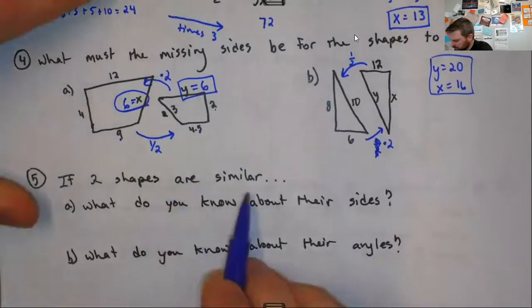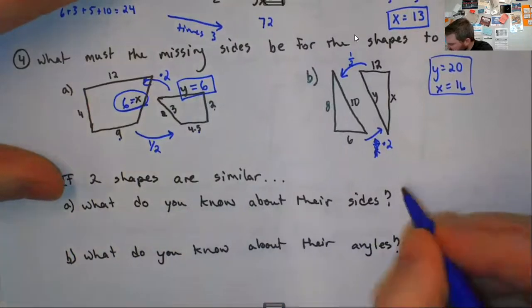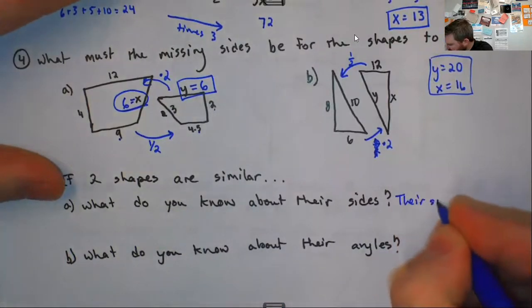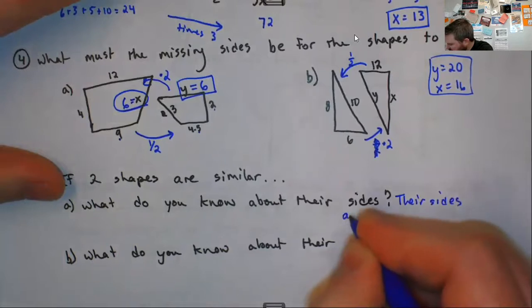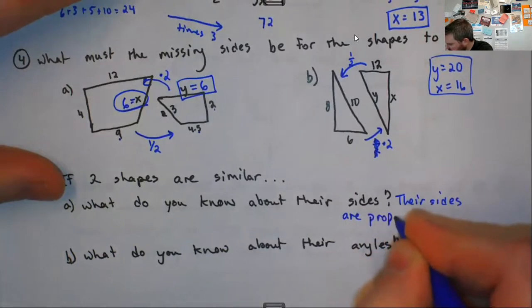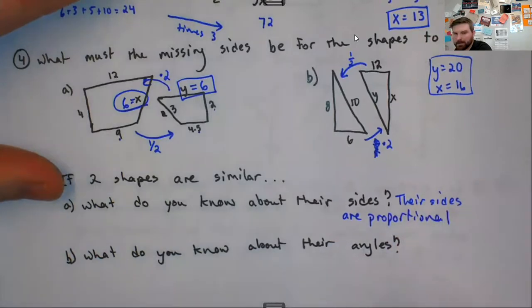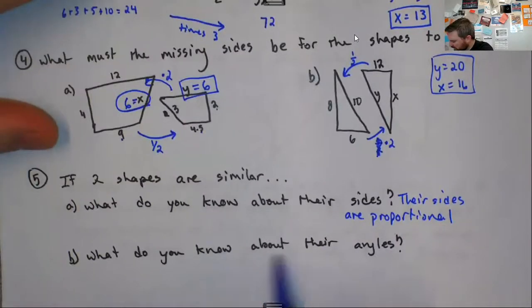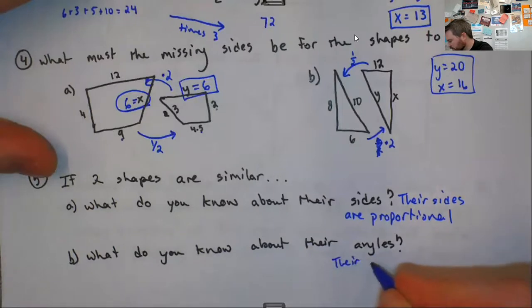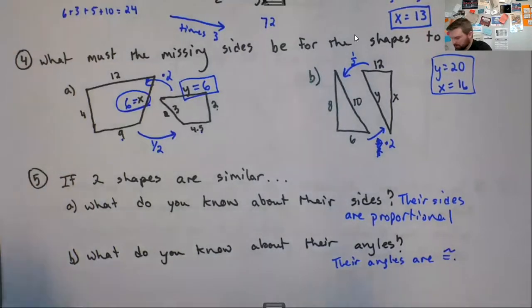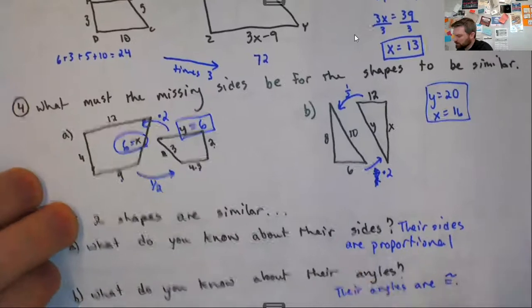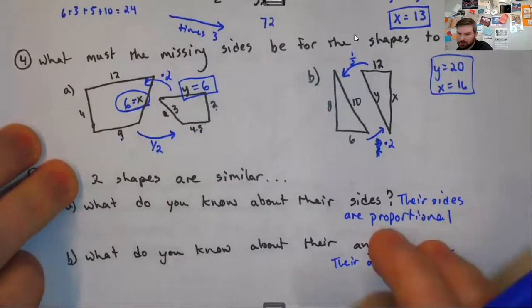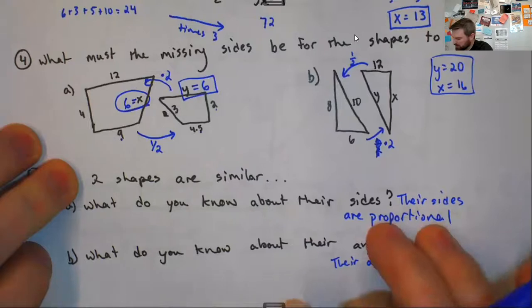If two shapes are similar, what do we know about their sides? Their sides are proportional. They have the same scale factor like we did up here. What do you know about their angles? Their angles are congruent. Their angles have to be the same. So same angles, proportional sides, or same shape, different size.